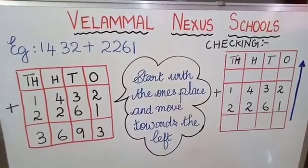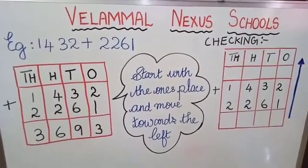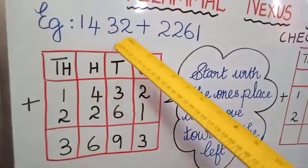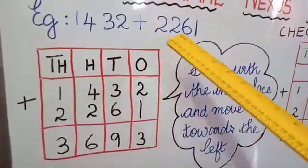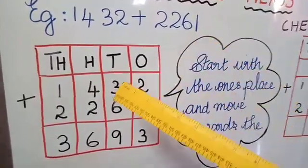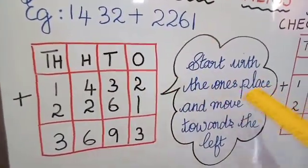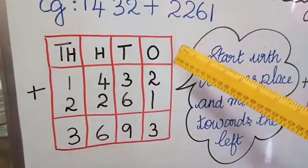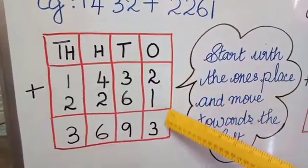Here we are going to see add and check using addition. We are going to add 1,432 with 2,261. First, we have to start with the ones place and move towards the left. Starting from the ones place, we have 2 plus 1 gives you 3.